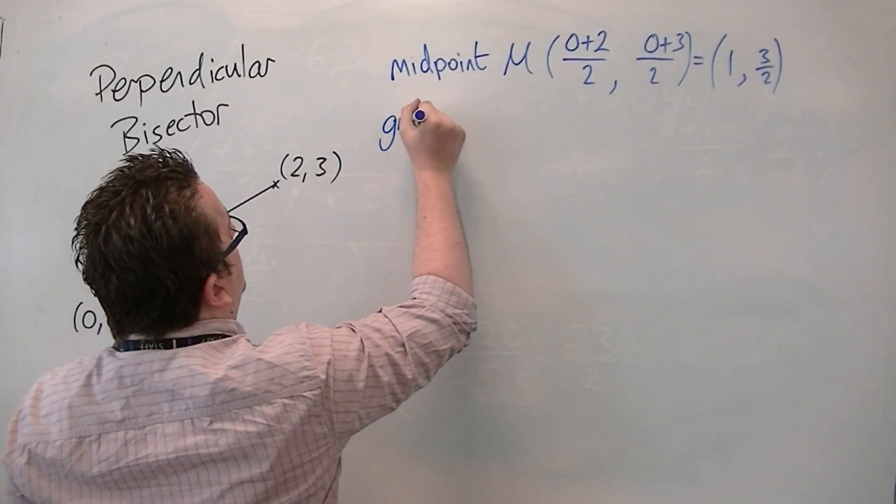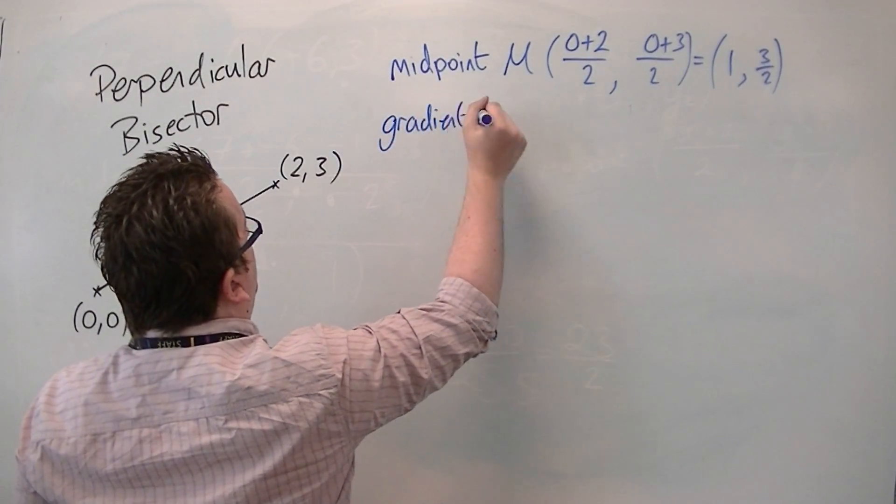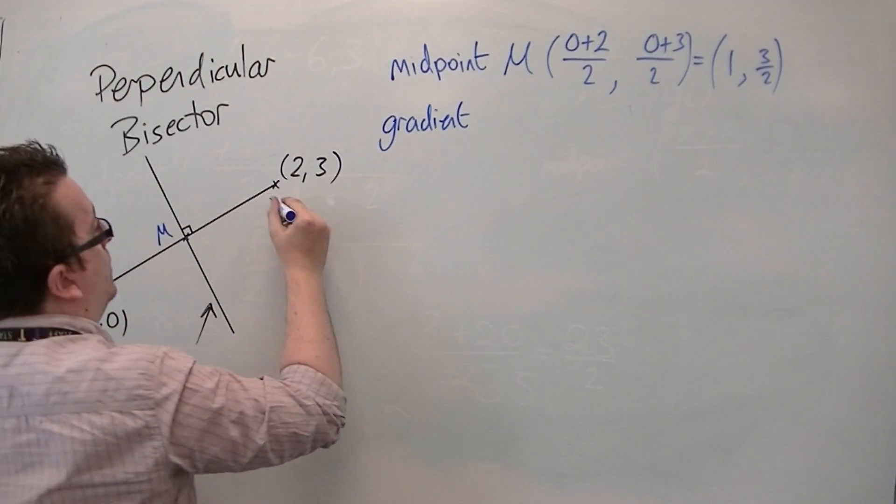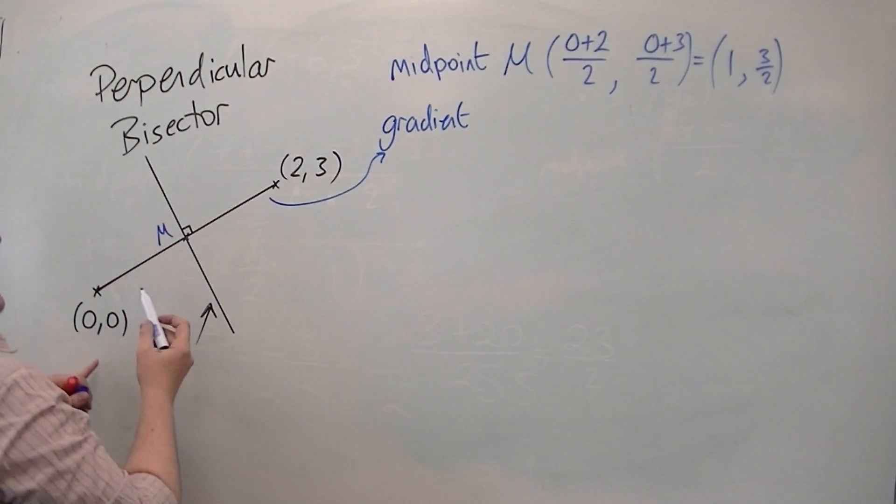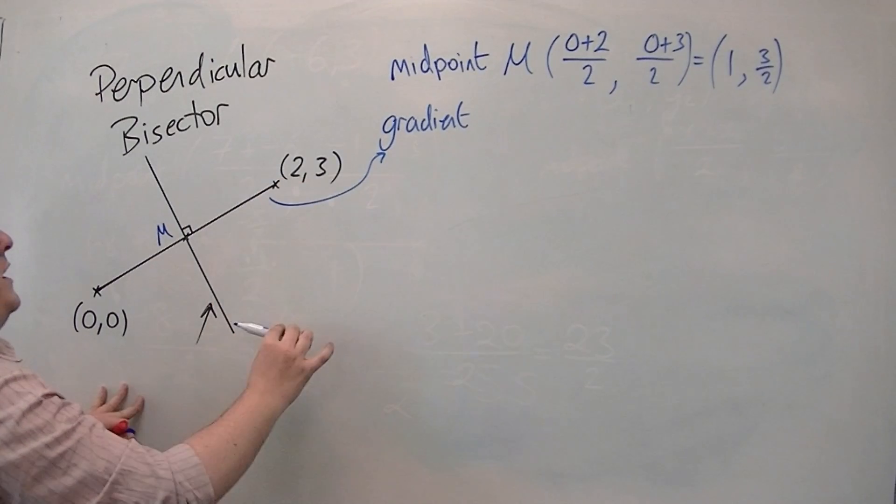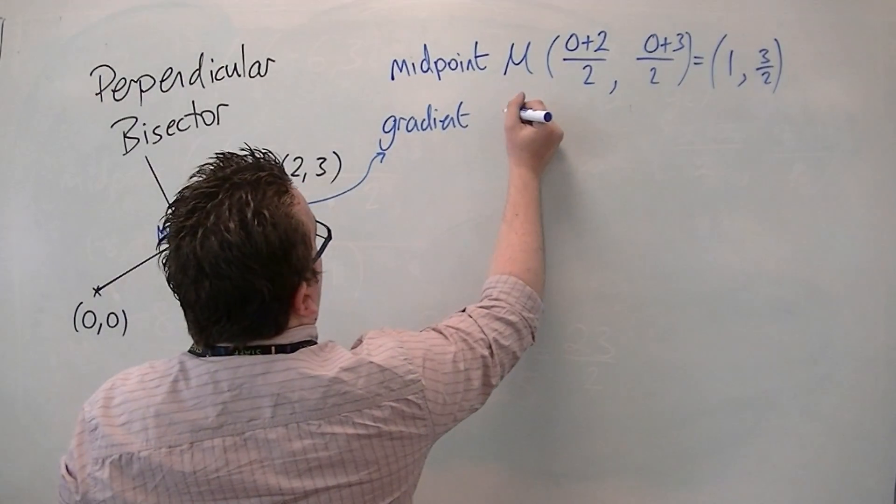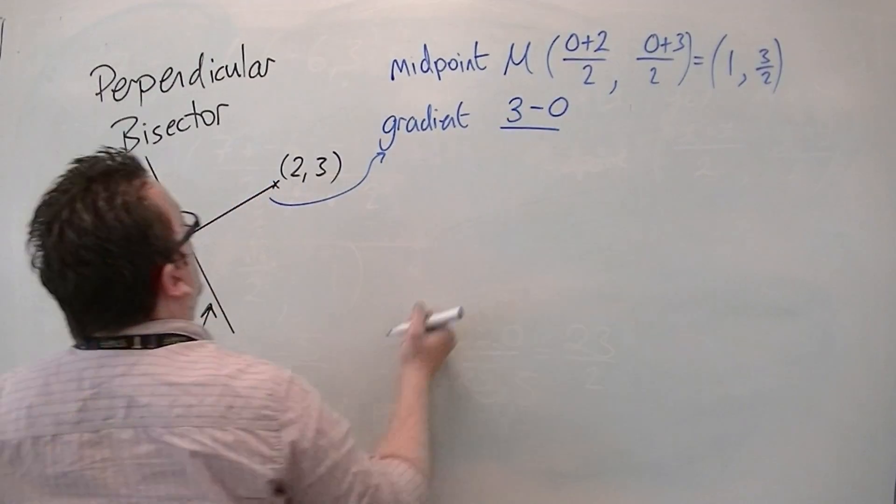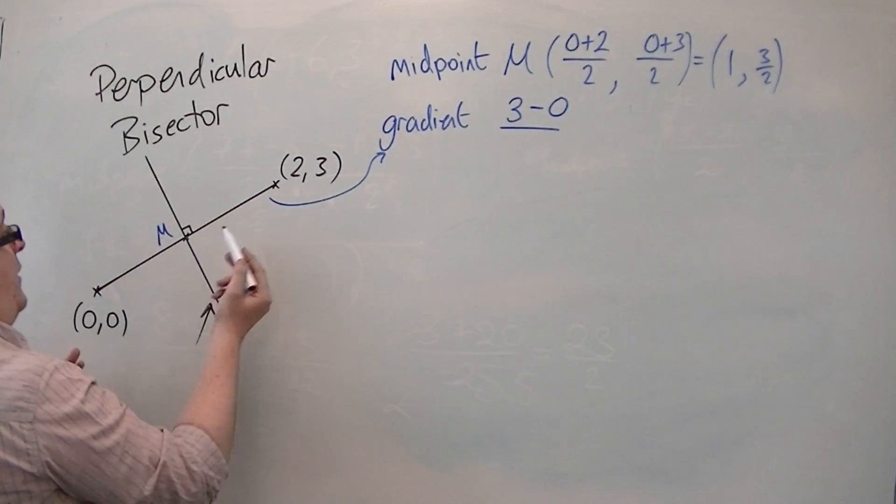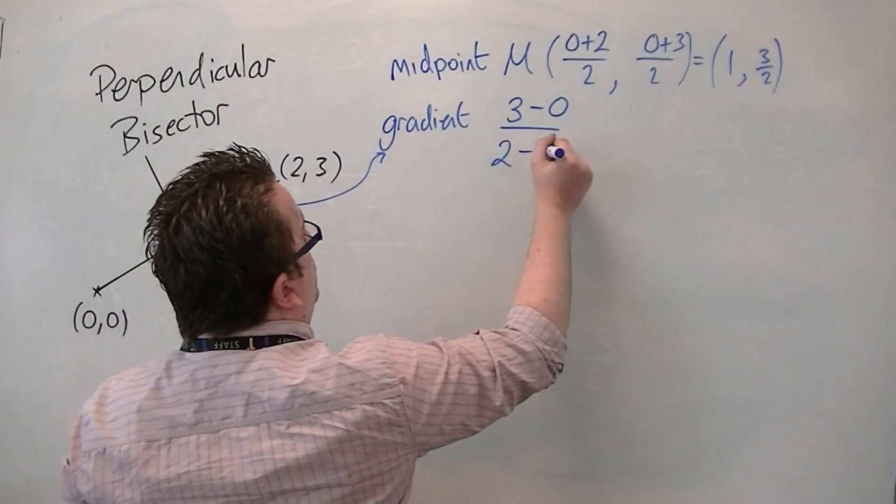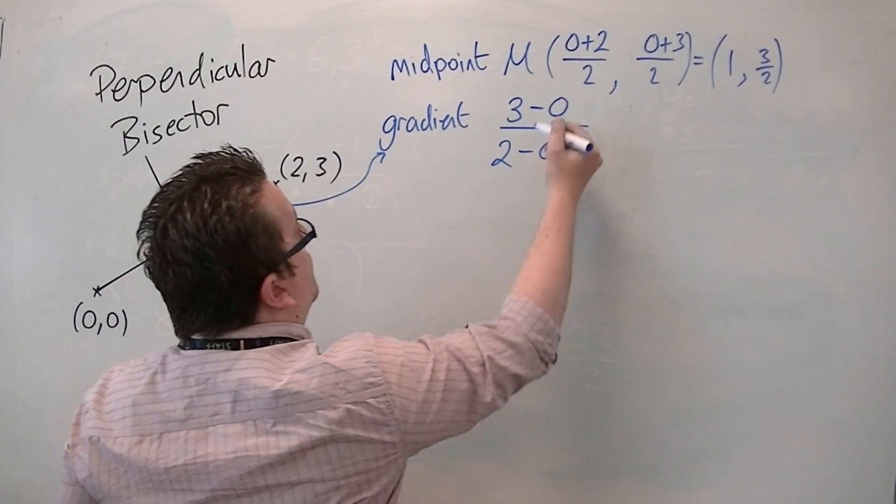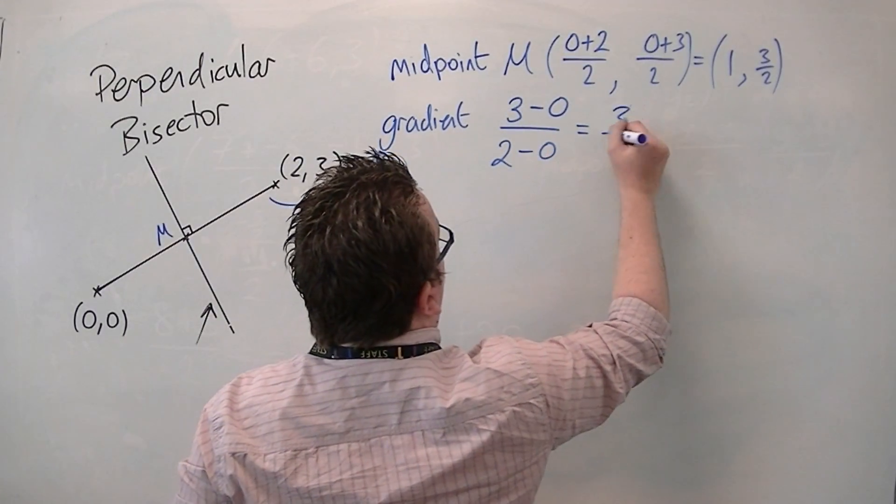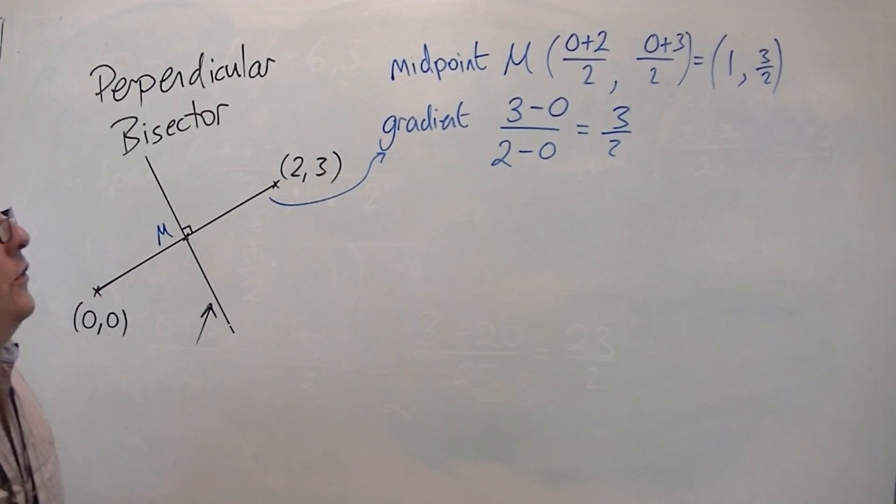So, the gradient of this line is the difference in the y-coordinates. So, 3 take away 0 over the difference in the x-coordinates, 2 take away 0. So, 3 over 2, so that's 1.5. So, the gradient of this line is 3 halves.